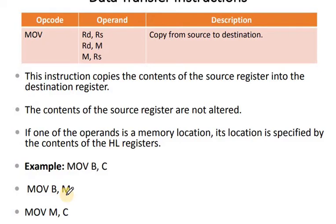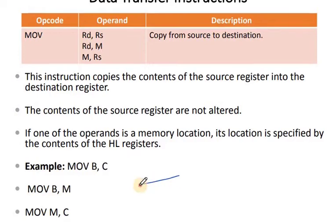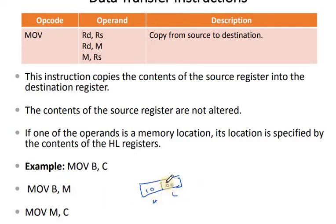If the operand is M, it is a memory location whose address is specified by the contents of the HL register. So the address is formed by the contents of the HL register — whatever address is stored in HL, that memory location is used. One operand's location is specified by the contents of the HL registers.